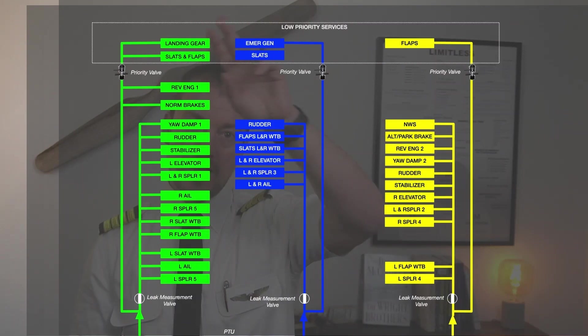At the top portion up here, I have outlined low priority services. These low priority services I have grouped because they sit downstream of the priority valve that I was talking about before.